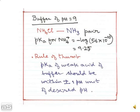Now let us see another example for the preparation of a buffer solution whose value is pH 9. Here we choose the ammonium chloride ammonia pair. The pKa value for ammonium plus ion is equal to minus log of 5.6 into 10 to the power of minus 10. This comes out as 9.25.